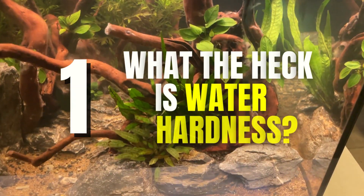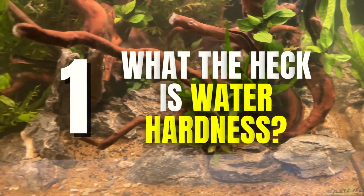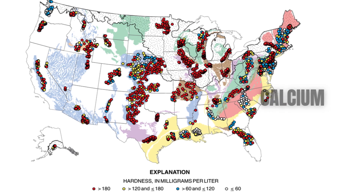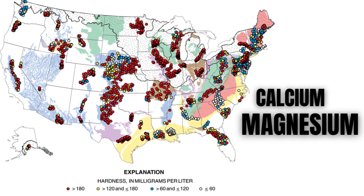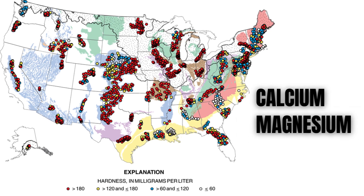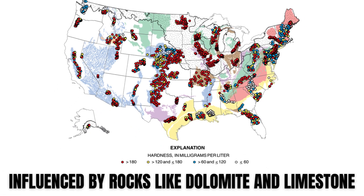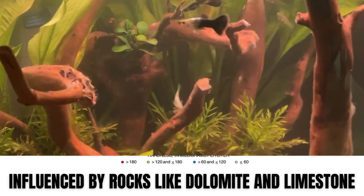First, what the heck is water hardness? This is the concentration of dissolved minerals, mainly calcium, magnesium, and some other trace elements. This mineral content varies based on the geological composition of the water source, influenced by rocks like dolomite and limestone.